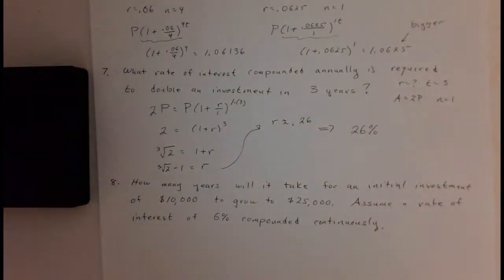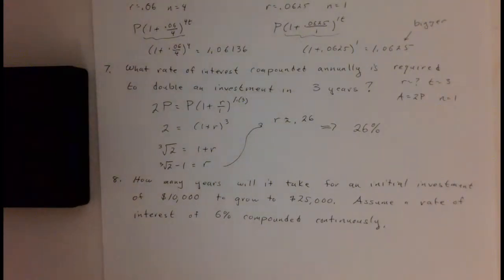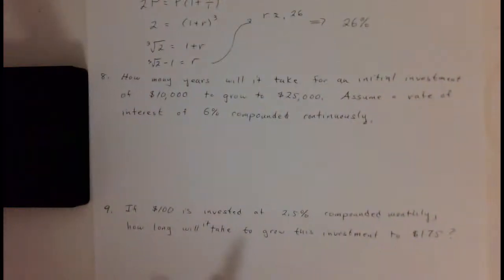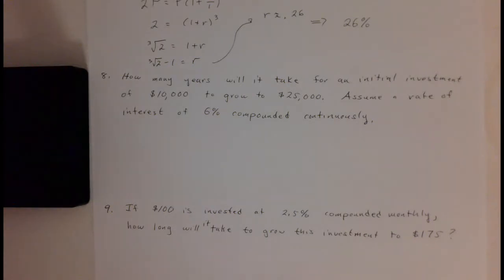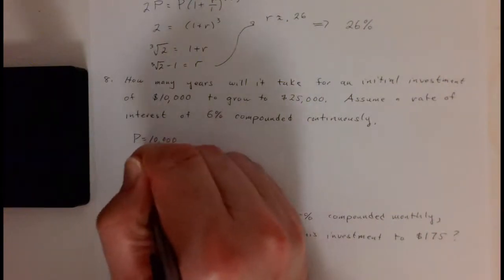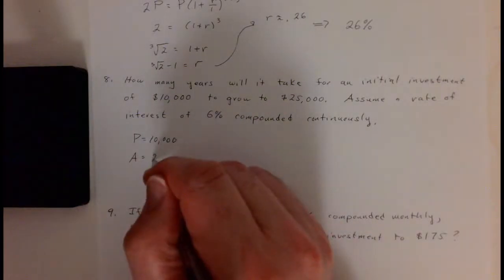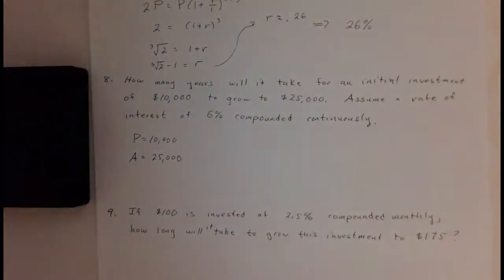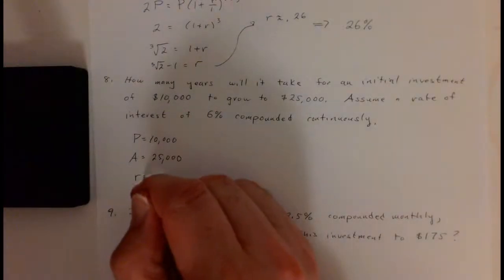That's the rate needed to double your money in exactly three years, and it doesn't matter what your initial investment is. For example eight: how many years will it take for an initial investment of ten thousand to grow to twenty-five thousand at an interest rate of six percent compounded continuously? Our principal P is ten thousand and our target amount A is twenty-five thousand, with R equal to point zero six.